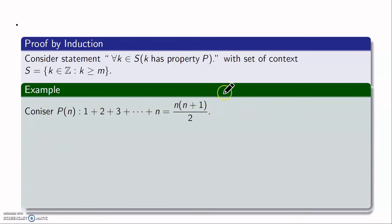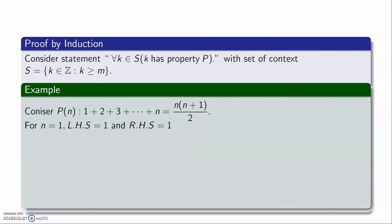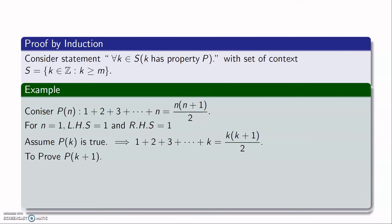First, we prove P(1): the left-hand side is 1, and the right-hand side is 1·2/2 = 1, so LHS equals RHS and P(1) holds. Now we assume the statement is true for some integer k — that is, P(k) is true, meaning 1 + 2 + 3 + … + k = k(k+1)/2. We now prove the statement for the next integer, k+1, by summing integers from 1 to k+1.